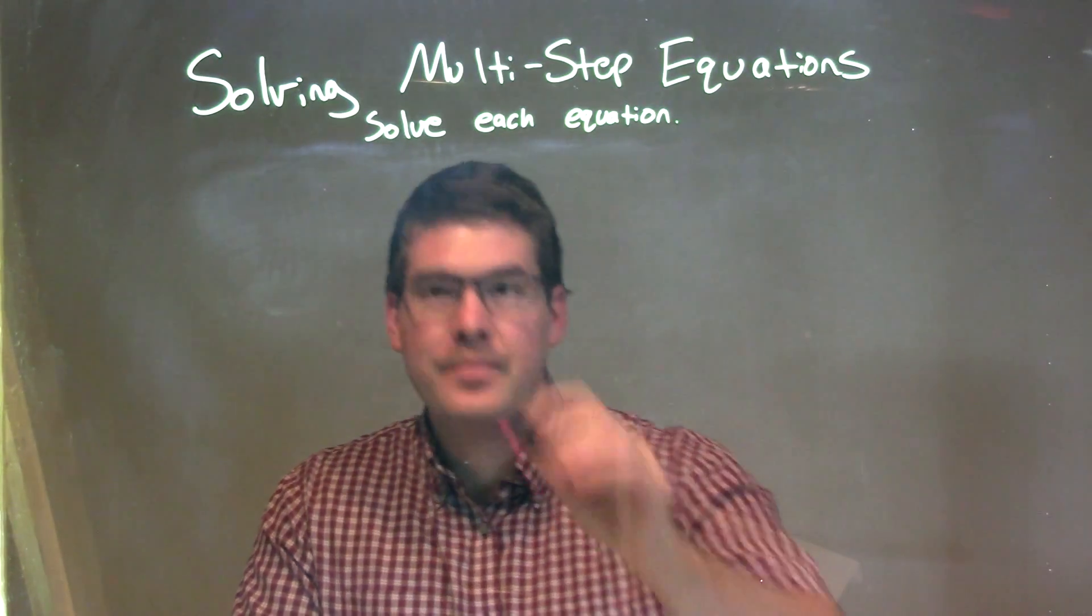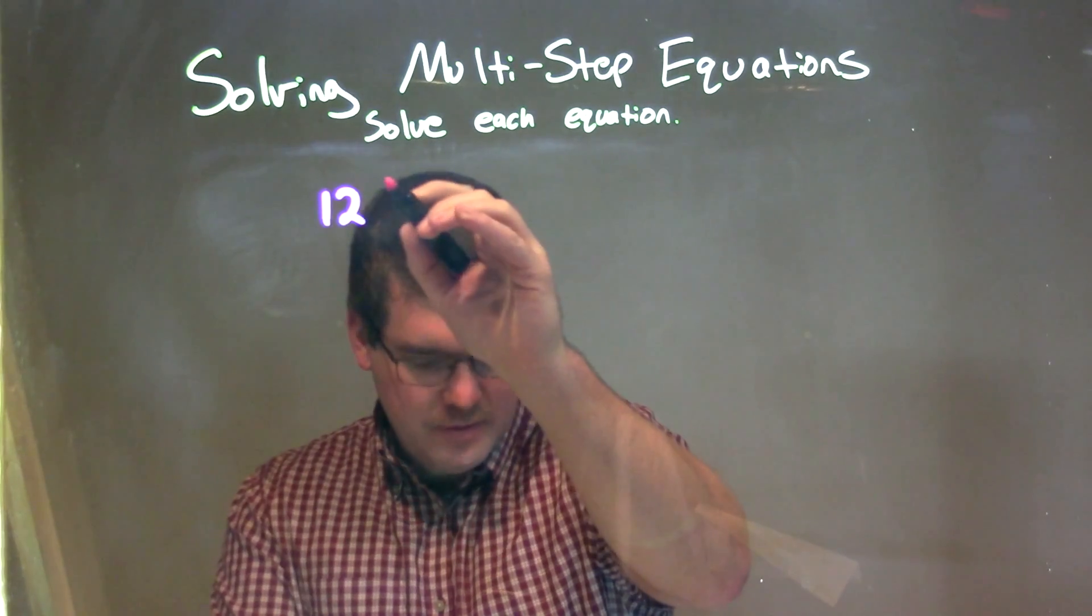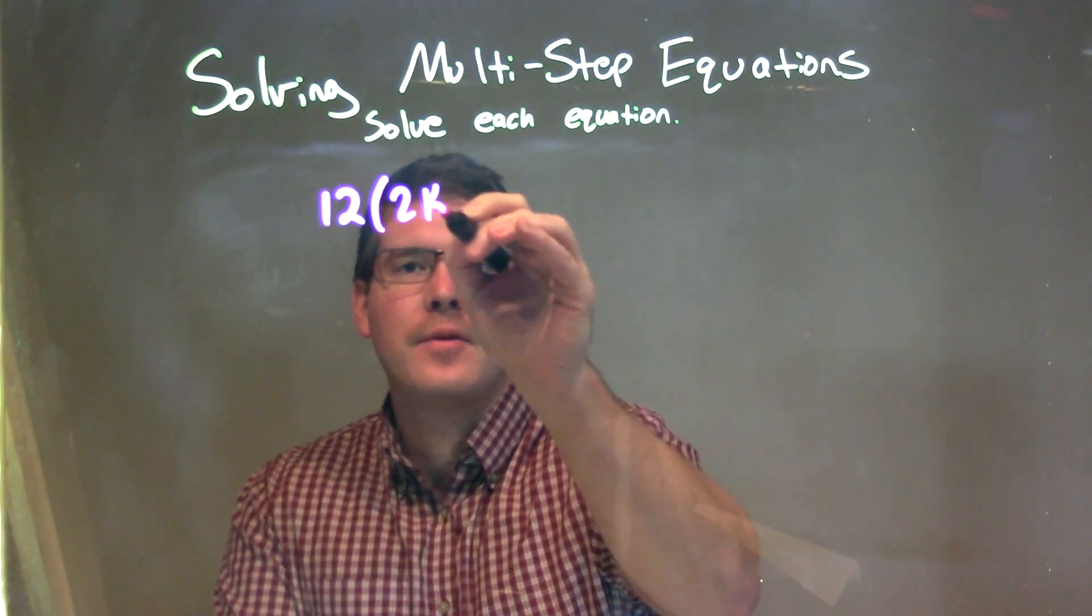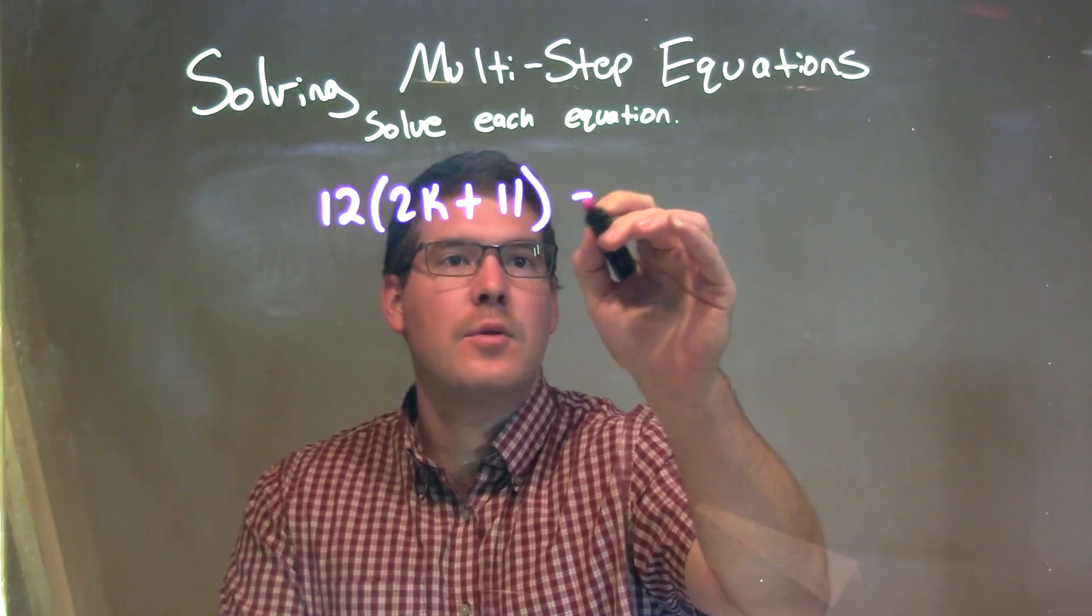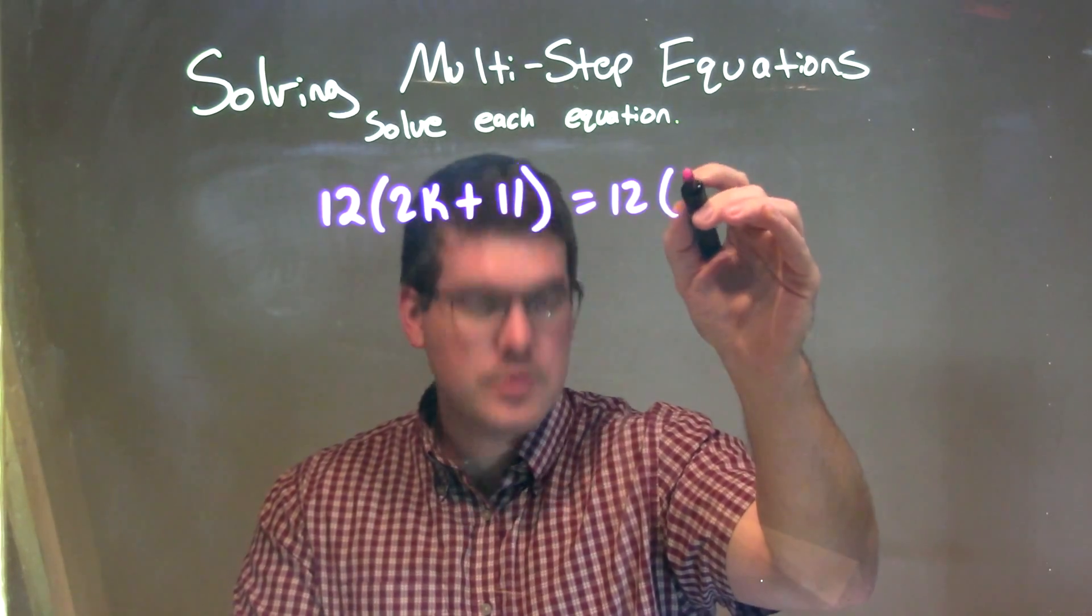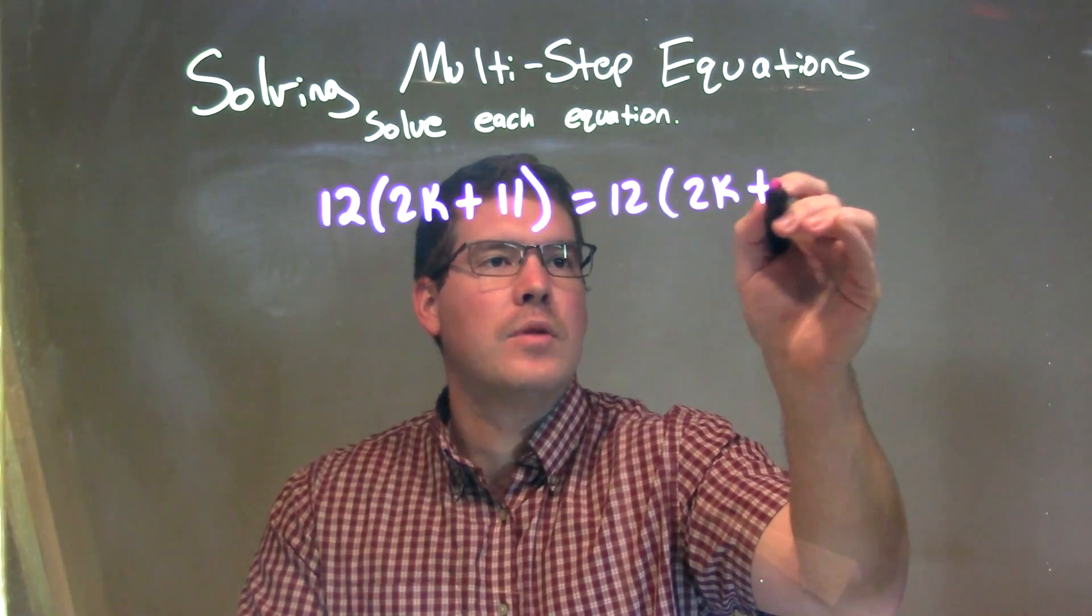So, if I was given this equation: 12 times 2k plus 11 is equal to 12 times 2k plus 12.